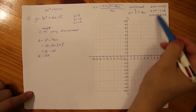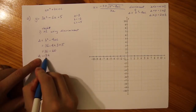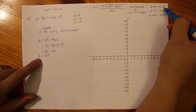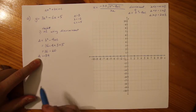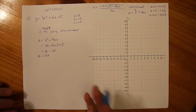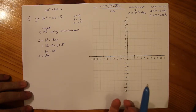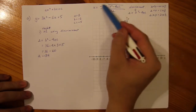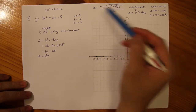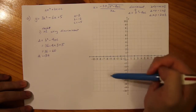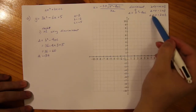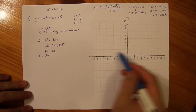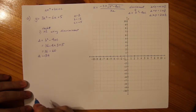Our discriminant is negative 24. Since it's less than 0, this graph has no X intercepts — it does not cut the X axis at all. That saves us the hassle of going through the quadratic formula to solve for X intercepts. We stop there for X intercepts because it does not cross the X axis.